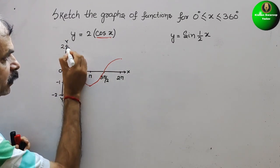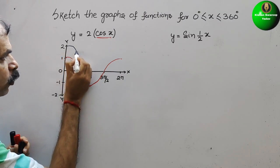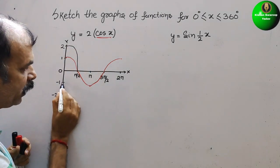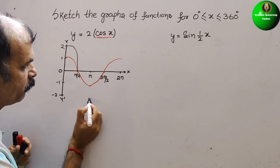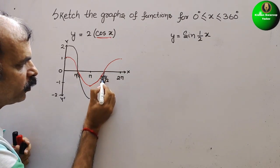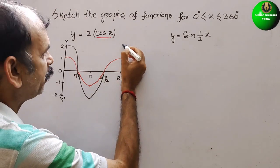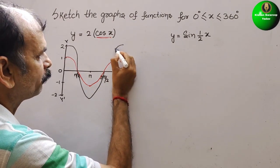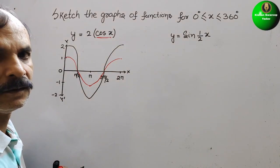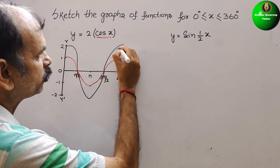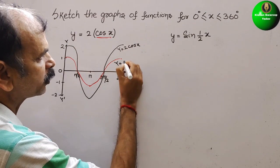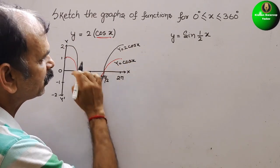Now the wave will start from 2. From here it will go to 0 at 90 degrees. Then at 180 degrees it should be minus 2, so here it will come down this way. Then again 0 at 270 degrees. At 2 pi it will be 2 again. So 2 times we have amplified that. This is your y = 2 cos x, and this is your y = cos x — that is the difference between them.